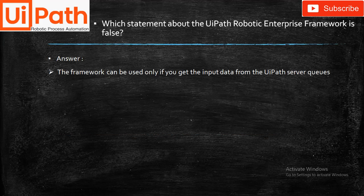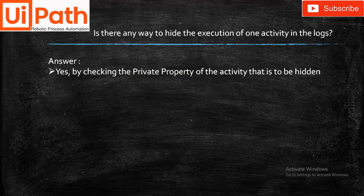Our first question is: which statement about the UiPath Robotic Enterprise Framework is false? There are several options available in the answer set, and you have to select whichever is false. Out of four options, the one that is false is: the framework can be used only if you get the input data from the UiPath server's queue.